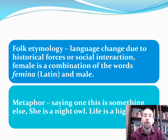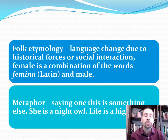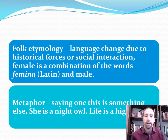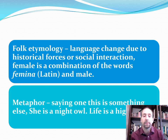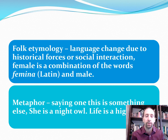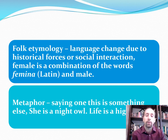Folk etymology refers to language change due to historical forces or social interaction. For example, 'female' is a combination of the Latin word 'femina' and the English word 'male.' A metaphor says something is something else — 'she is a night owl,' 'life is a highway.' If you say something is like something else, that's a simile. These can also be idiomatic expressions.